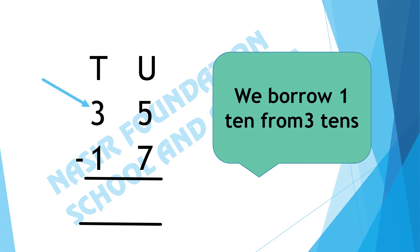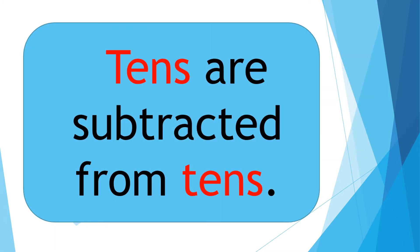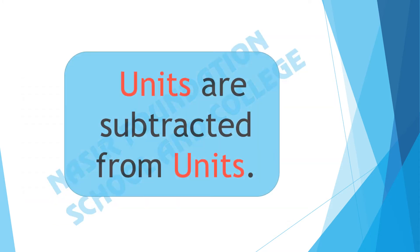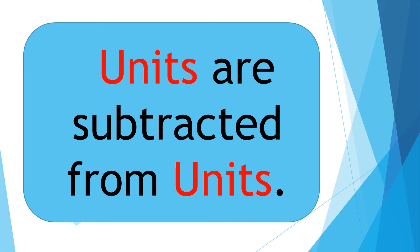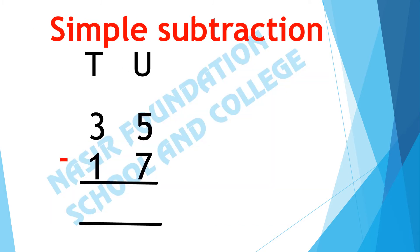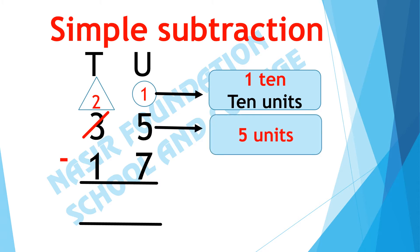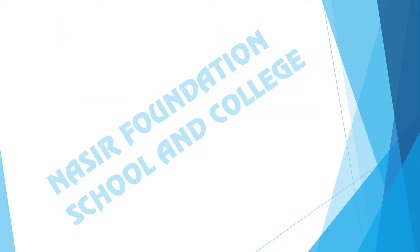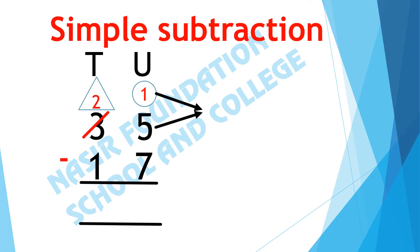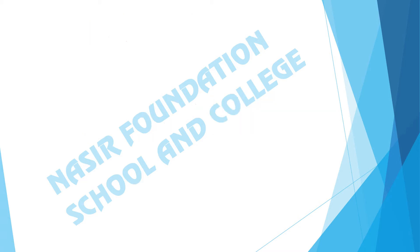When we regroup the tens, we borrow 1 ten from the 3 tens. From 3 tens we take a borrow and here it leaves 2. Tens are subtracted from tens and units are subtracted from units. We take 1 borrow from 3 tens, leaving 2 tens. 1 ten means 10 units, and there are 5 units, so we have 1 ten and 5 units — that makes 15 units.